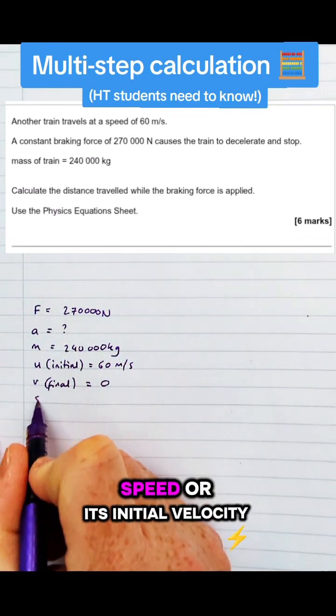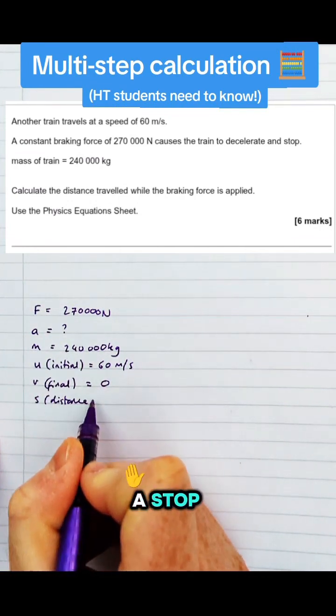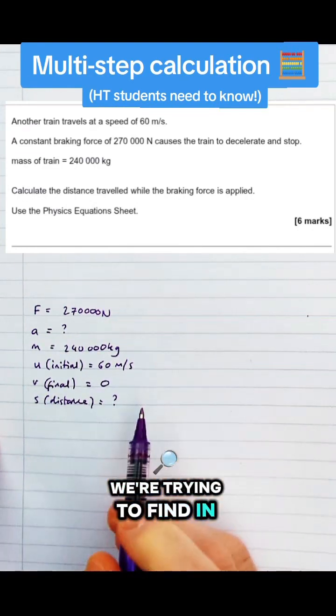That's its initial speed or its initial velocity, then it slows to a stop. Its distance is what we're trying to find in this question.